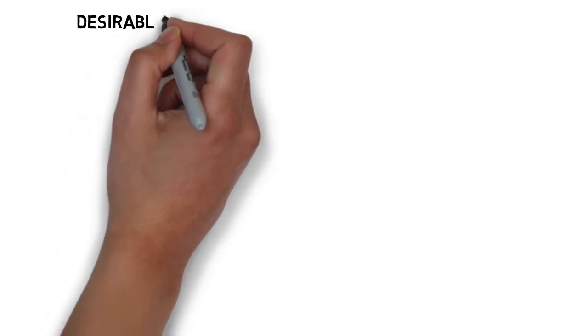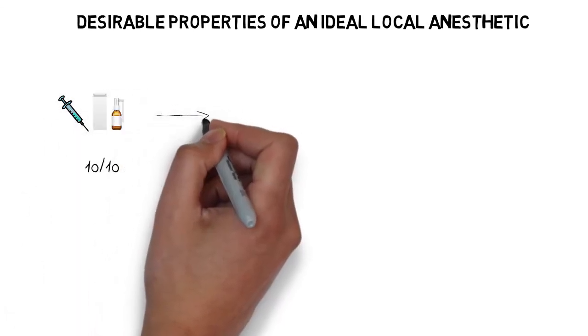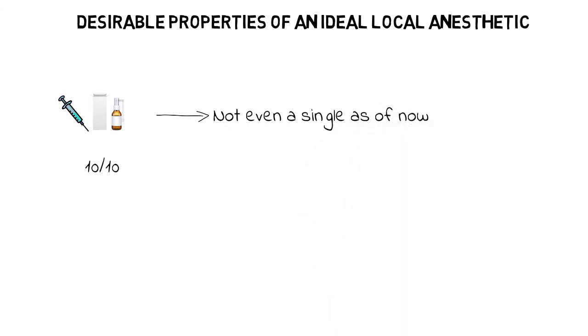So these were the basic desirable qualities of an ideal local anesthetic. Now, there is not even a single local anesthetic agent in use nowadays that meets all of these desirable qualities. However, most of the local anesthetics being used today do meet most of the properties discussed above.